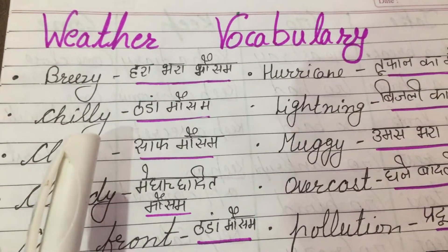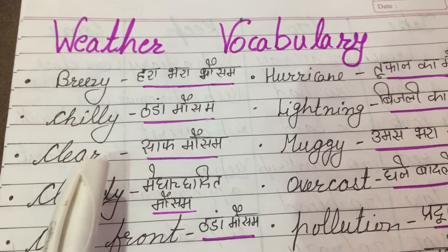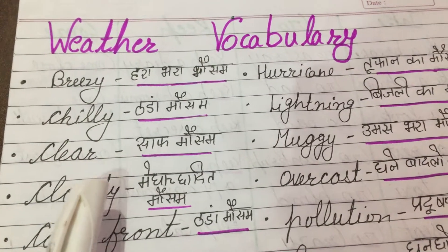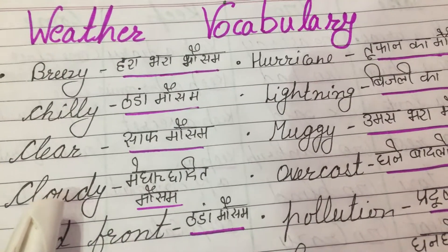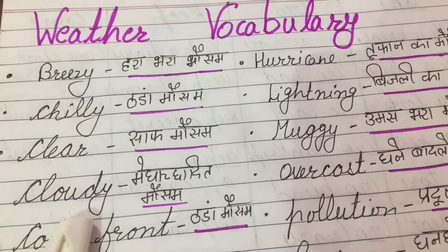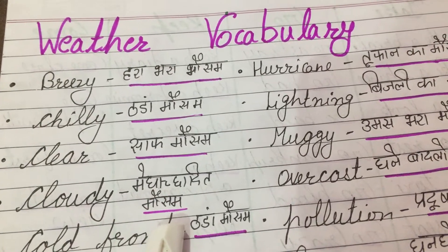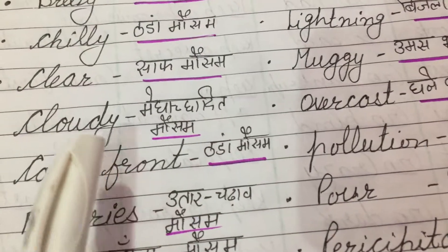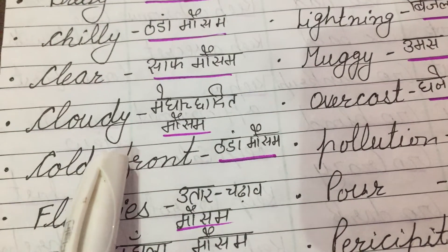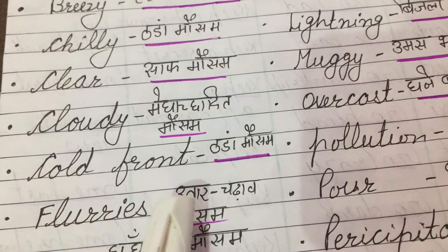Breezy means Harabhar mousam. Chilly means Thanda mousam. Clear means Saaf mousam. Cloudy means Mega chadit mousam, means Badalwala.